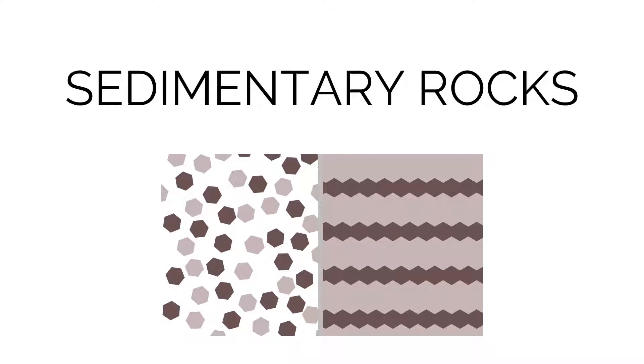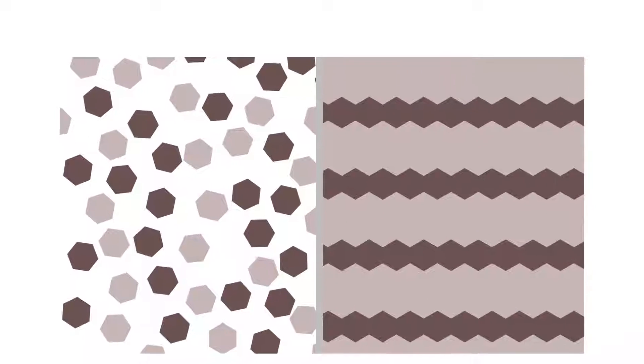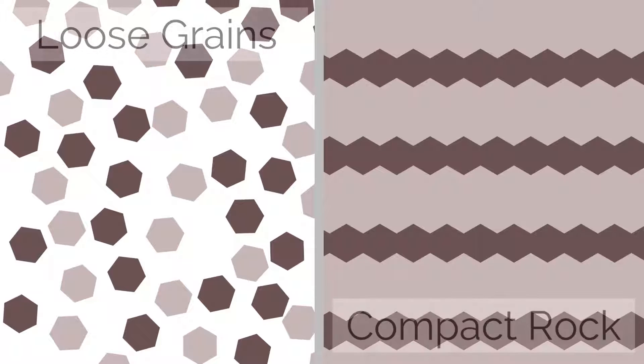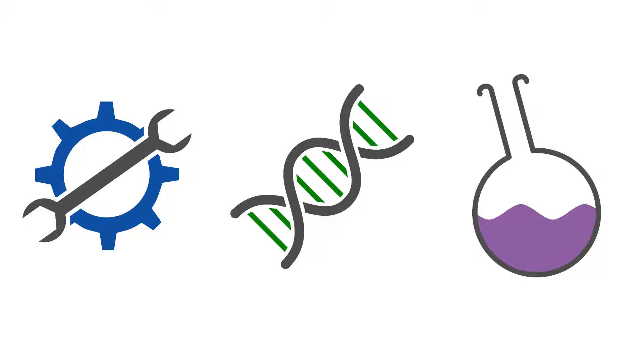Sedimentary rocks are those that form from weathered and eroded material, which is compacted into rocks. They can be grouped into three distinct types: clastic, biochemical and chemical.